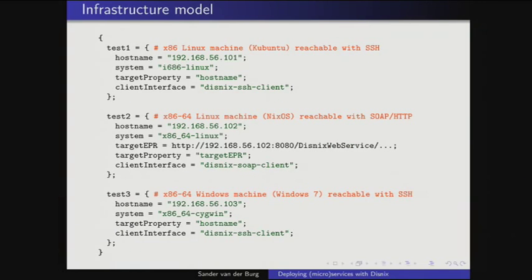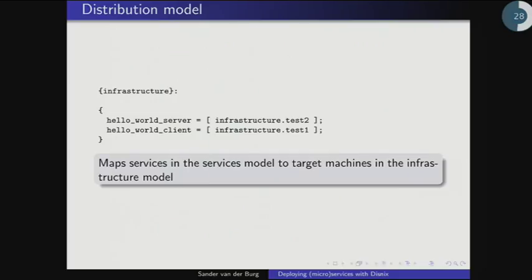We also need to know what machines are available. In the infrastructure model we have three machine types: a 32-bit Kubuntu Linux machine reachable via SSH, a 64-bit NixOS machine reachable through a web service instead of SSH, and a 64-bit Windows 7 machine reachable via SSH. Then the distribution model maps services to machines — for example, the Hello World server goes to Machine Test 2 (the 64-bit NixOS machine) and the client to Machine Test 1 (the 32-bit Kubuntu machine).